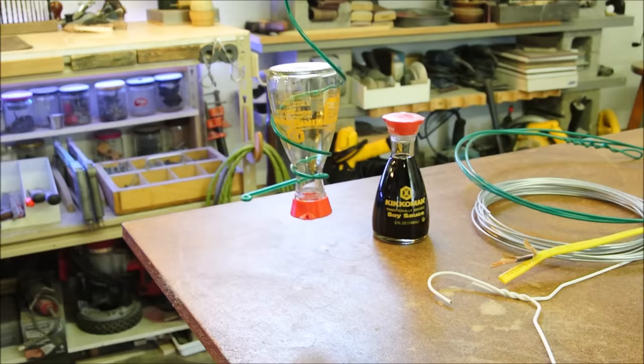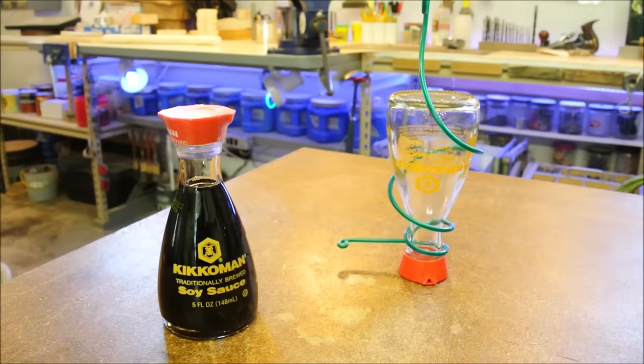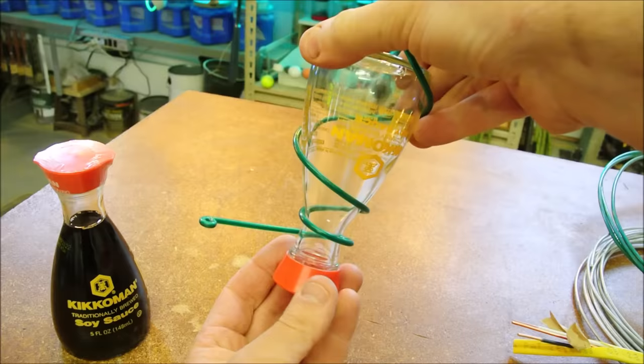At its most basic level, this is just a bottle and some wire. So let's talk about those two things first. A soy sauce bottle like this one can be found at just about any supermarket for about a dollar and a half.